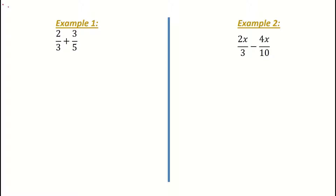In order to add fractions, we first need to get a number on the denominator that's common. The denominator is the number on the bottom of the fraction. Your common denominator is quite easy to find — all you have to do is multiply the two denominators by each other, the three and the five. So my common denominator — I'm going to call it CD — is going to be 15. I'm multiplying the three by the five.